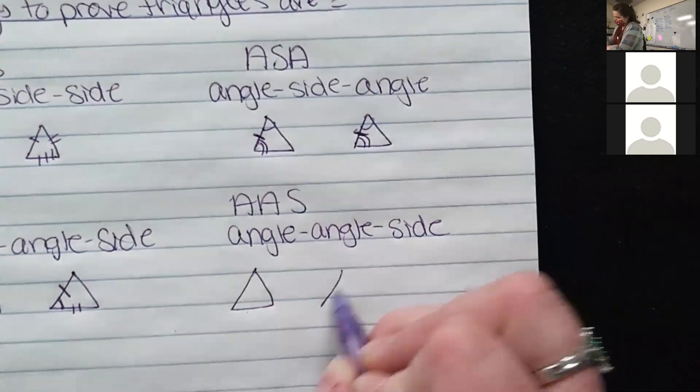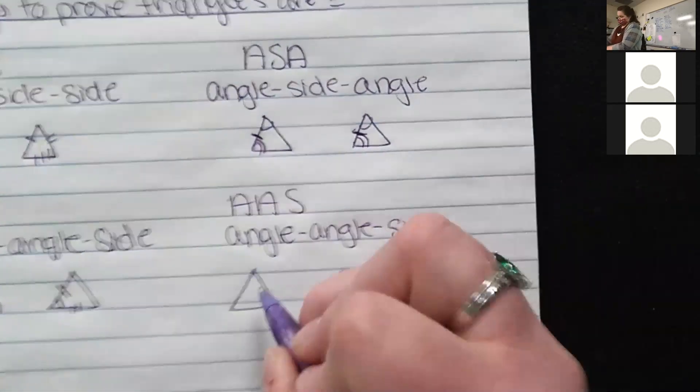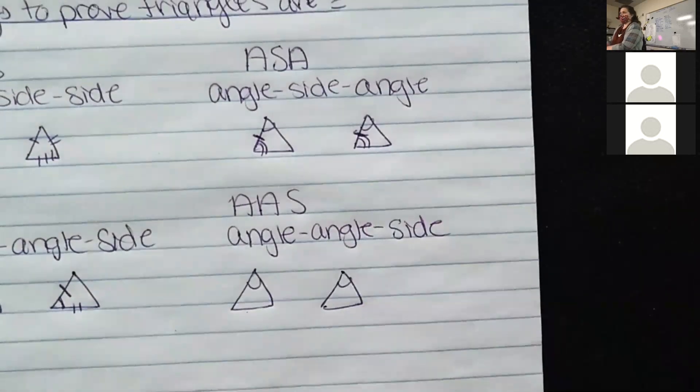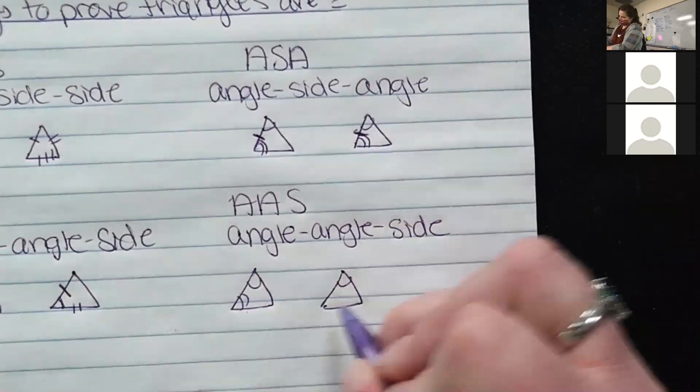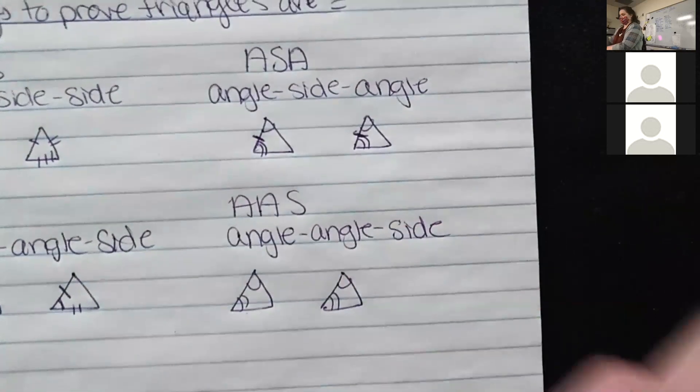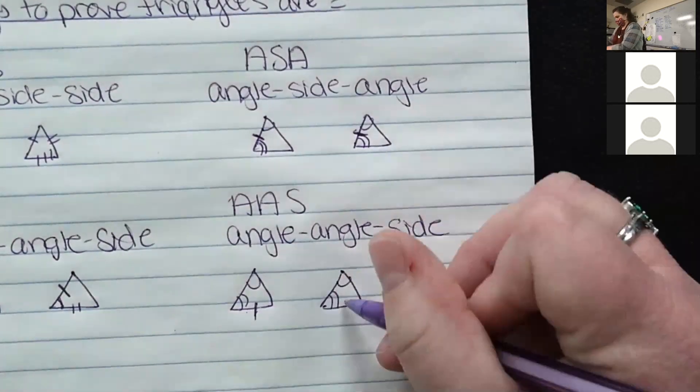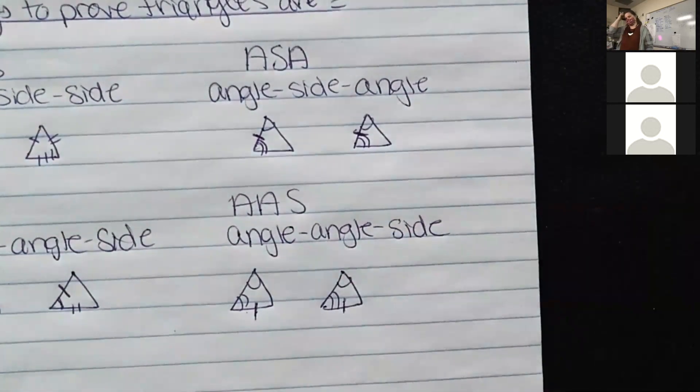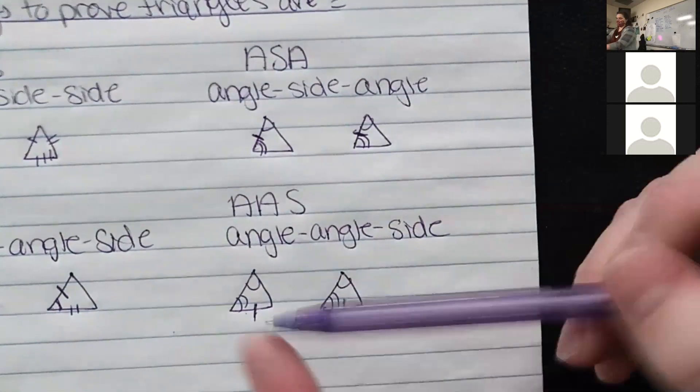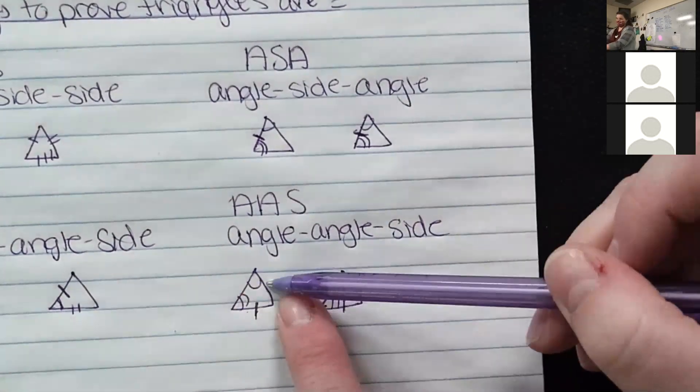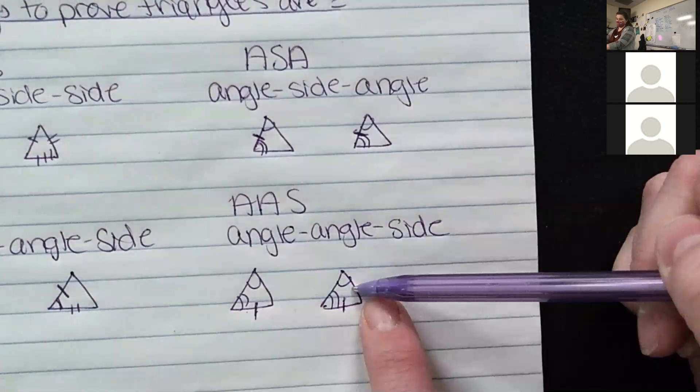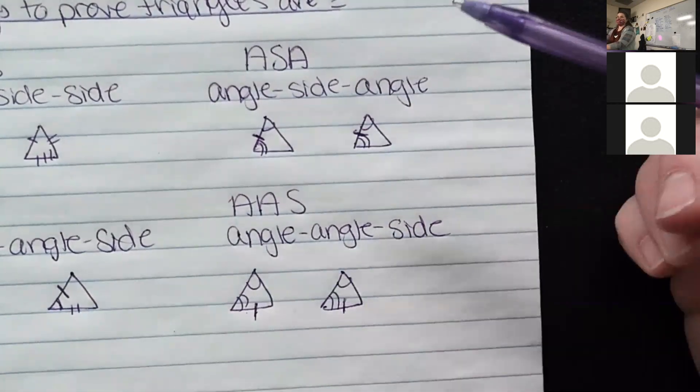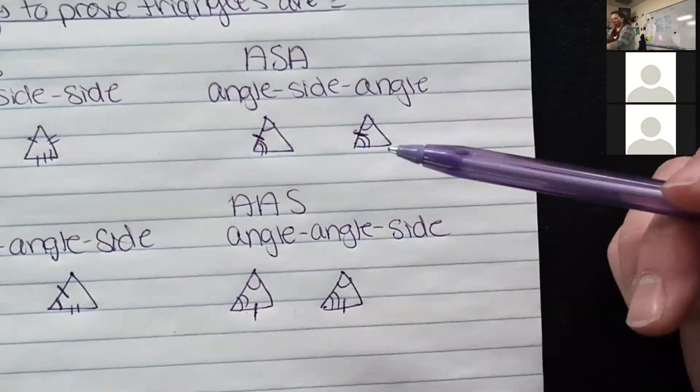So a triangle and a triangle, one angle, another angle, and then the next side. Angle-angle-side. Now could that have worked this way too, angle-angle-side? If this side was the same as this, yeah.